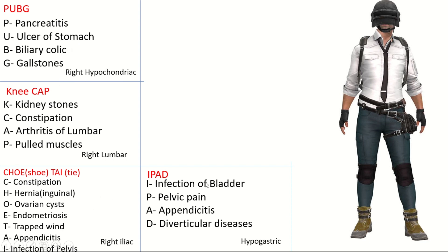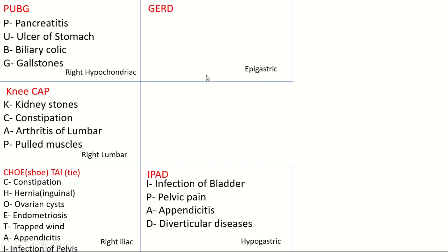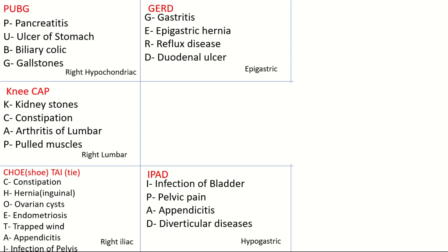Going back up to the epigastric region: pain due to reflux diseases such as gastroesophageal reflux disease is felt here, and the mnemonic is ZERD itself. Z is for gastritis, E is for epigastric hernia, R is for reflux disease, and D is for duodenal ulcer. You can also add stomach ulcer, since that pain can be felt in the epigastric region too.